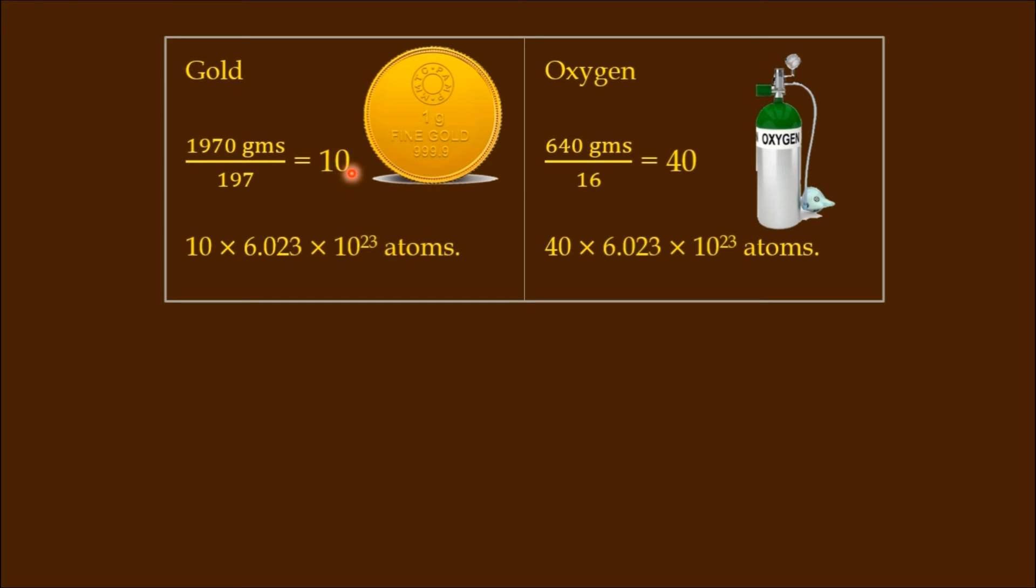The weight of the oxygen gas in that oxygen gas pot, not the container - the weight of the oxygen gas is 640 grams. Atomic weight is 16. 640 by 16, that is 40.